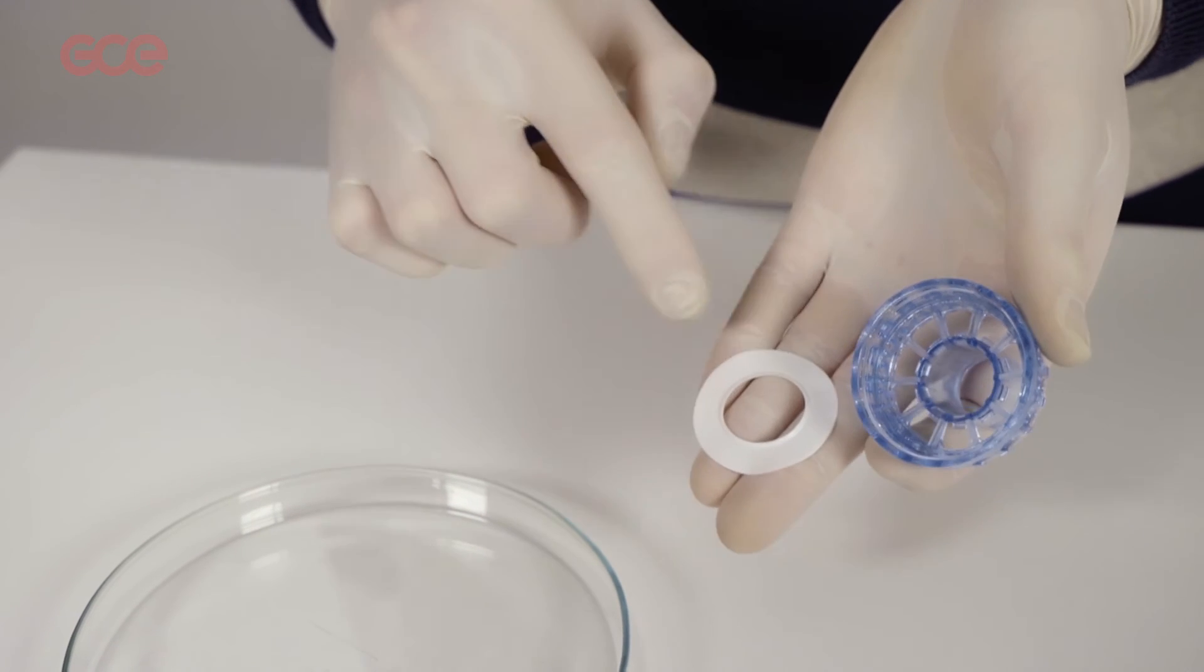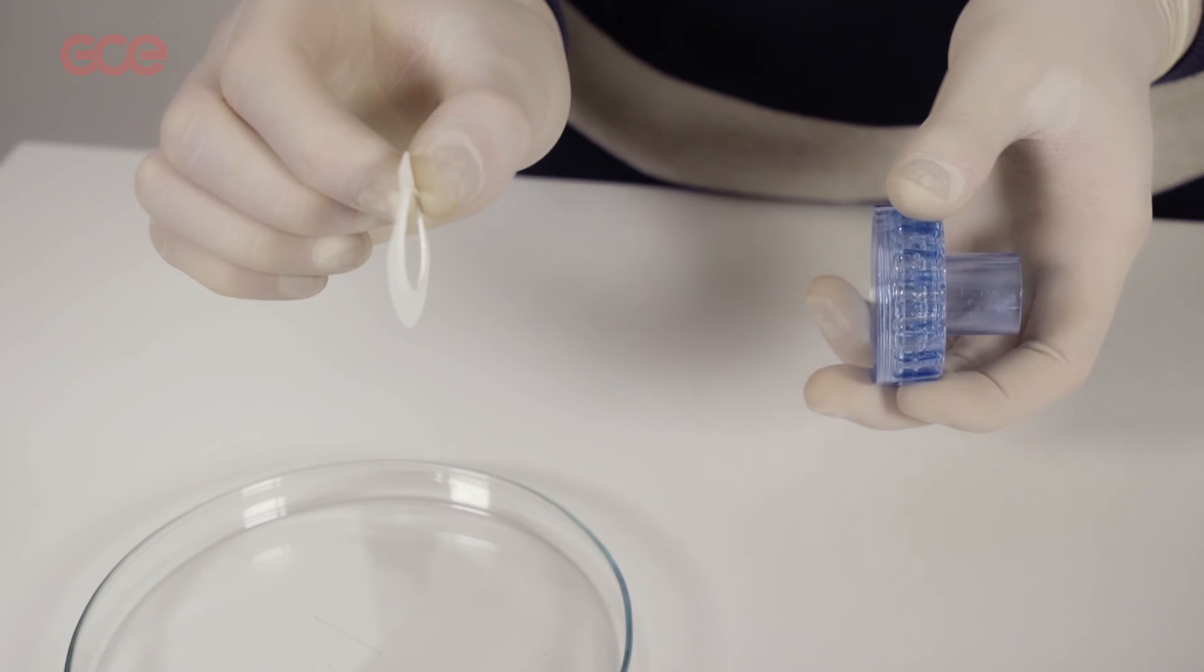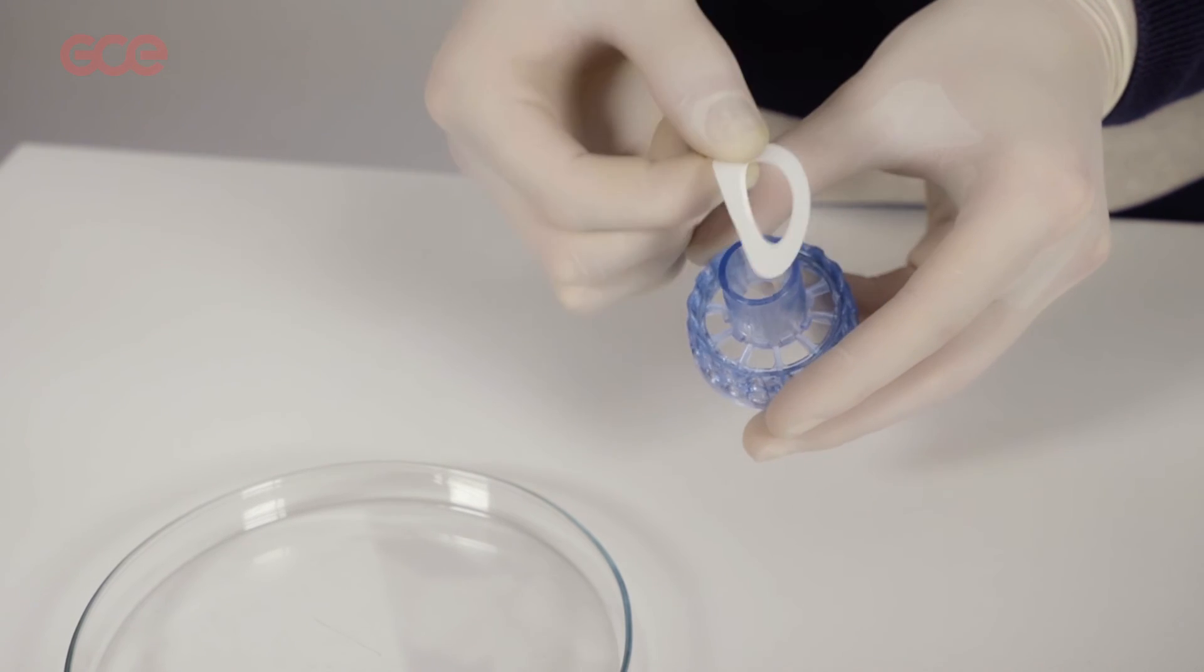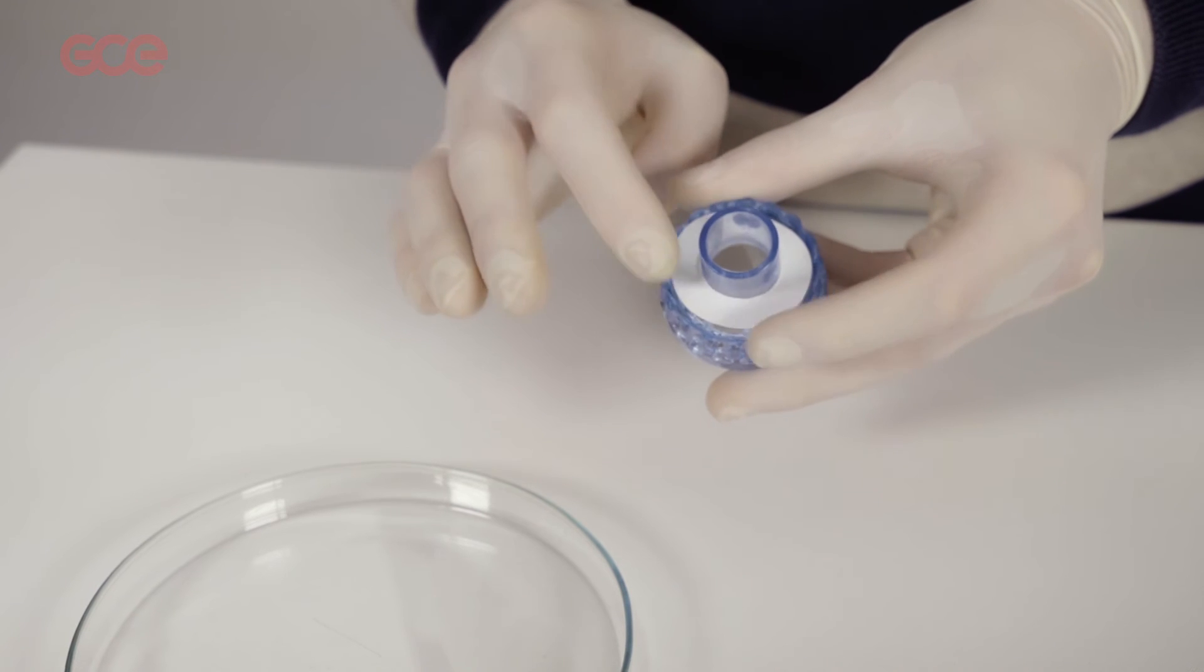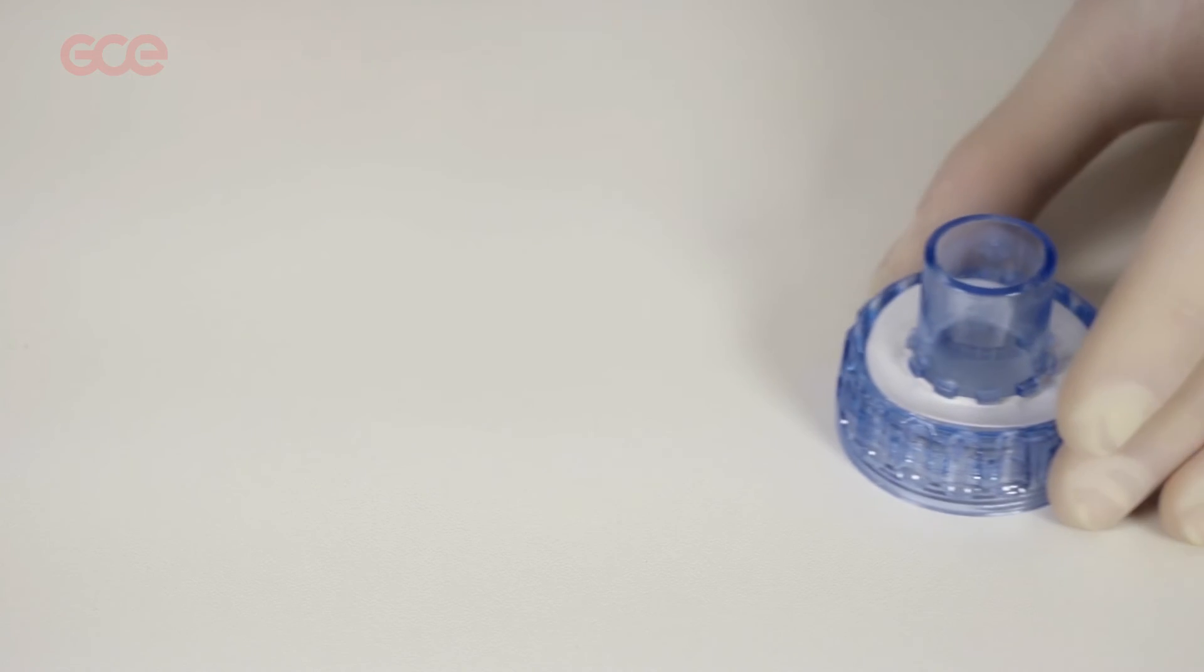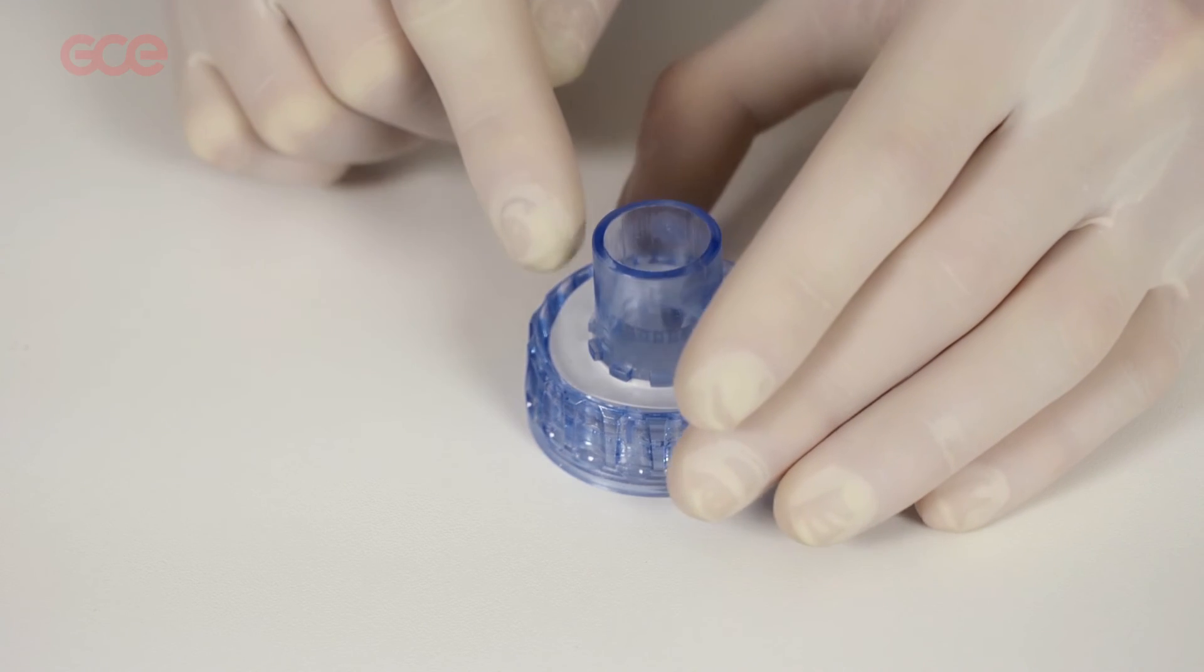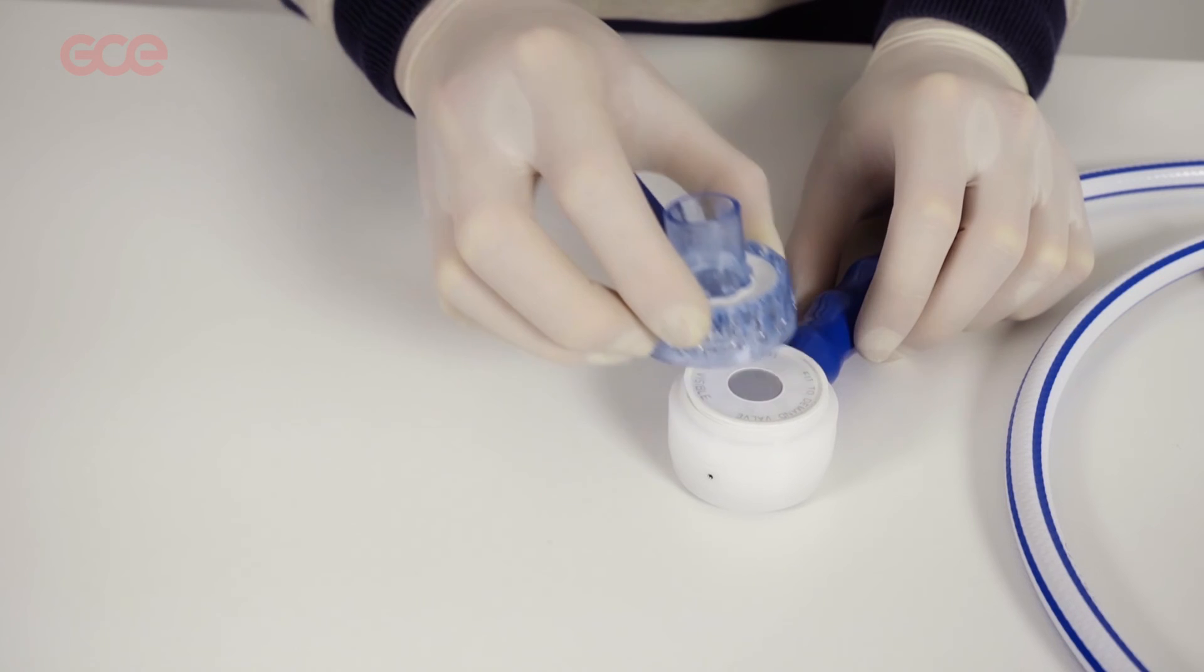Place the exhale flap into the patient port making sure the rim is placed facing up. Place the valve in the load disc. Screw the patient port onto the demand valve.